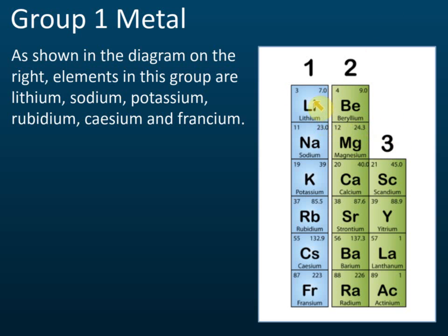Elements in group one metals are: lithium, sodium, potassium, rubidium, cesium, and francium. In some books, hydrogen is also listed here, but hydrogen's physical and chemical properties are very different from group one metals, so we separate it and do not put hydrogen under group one metals.